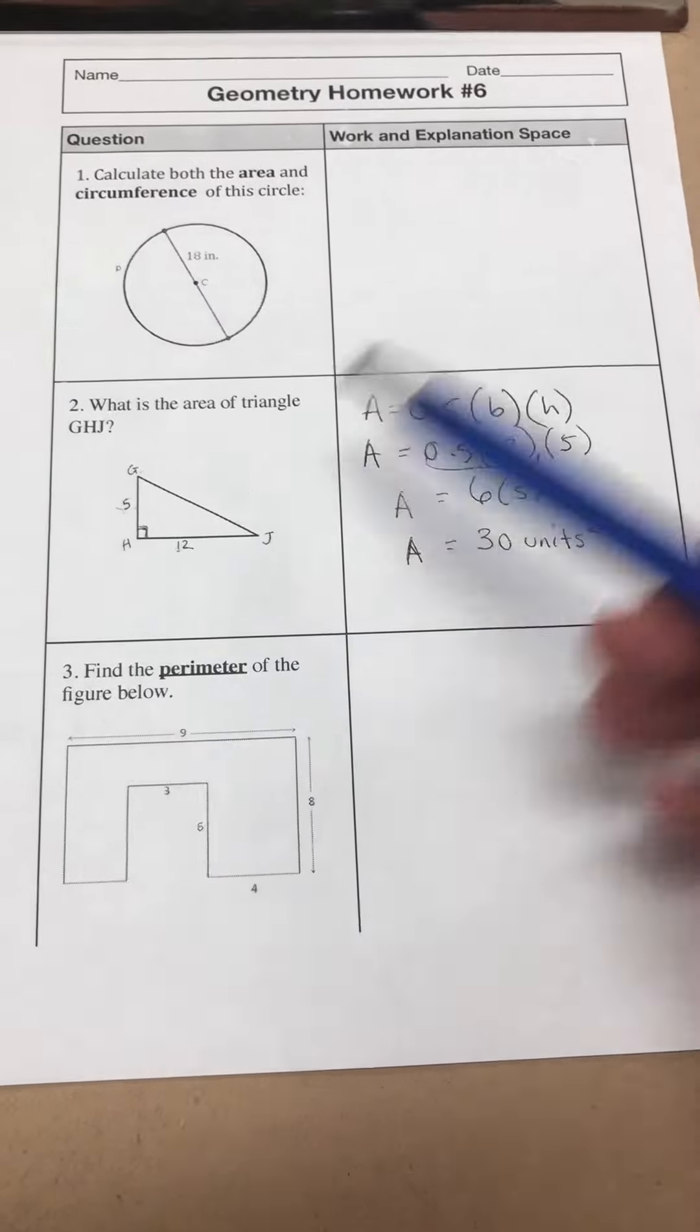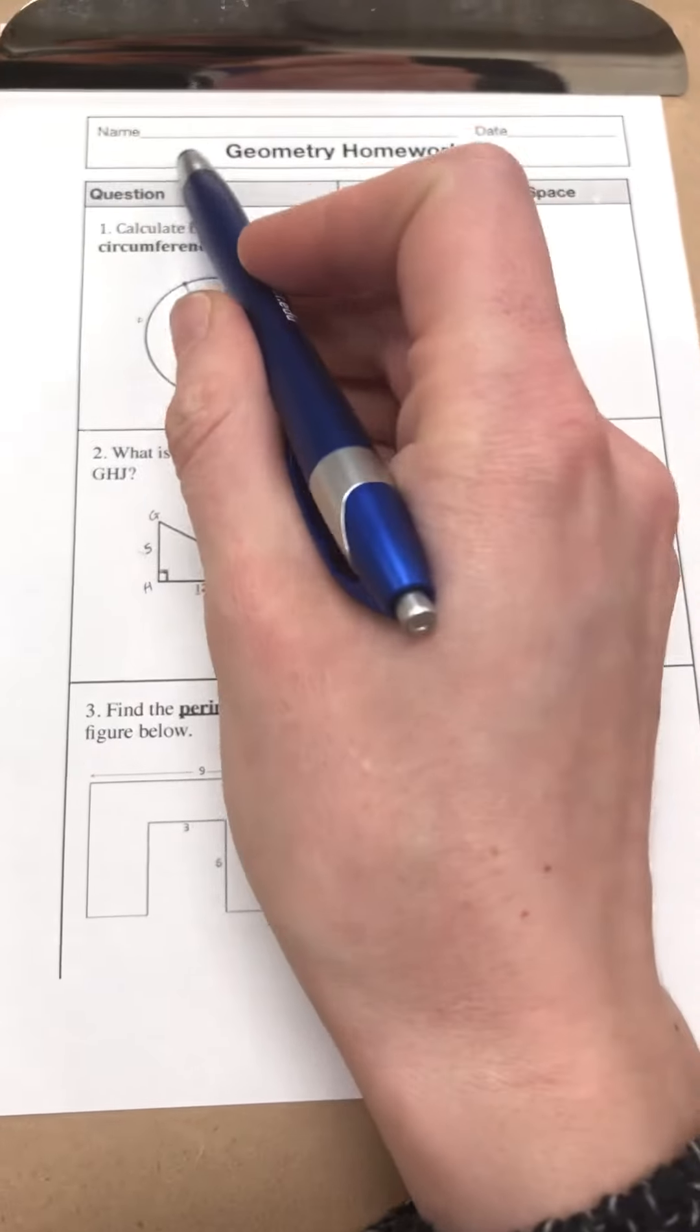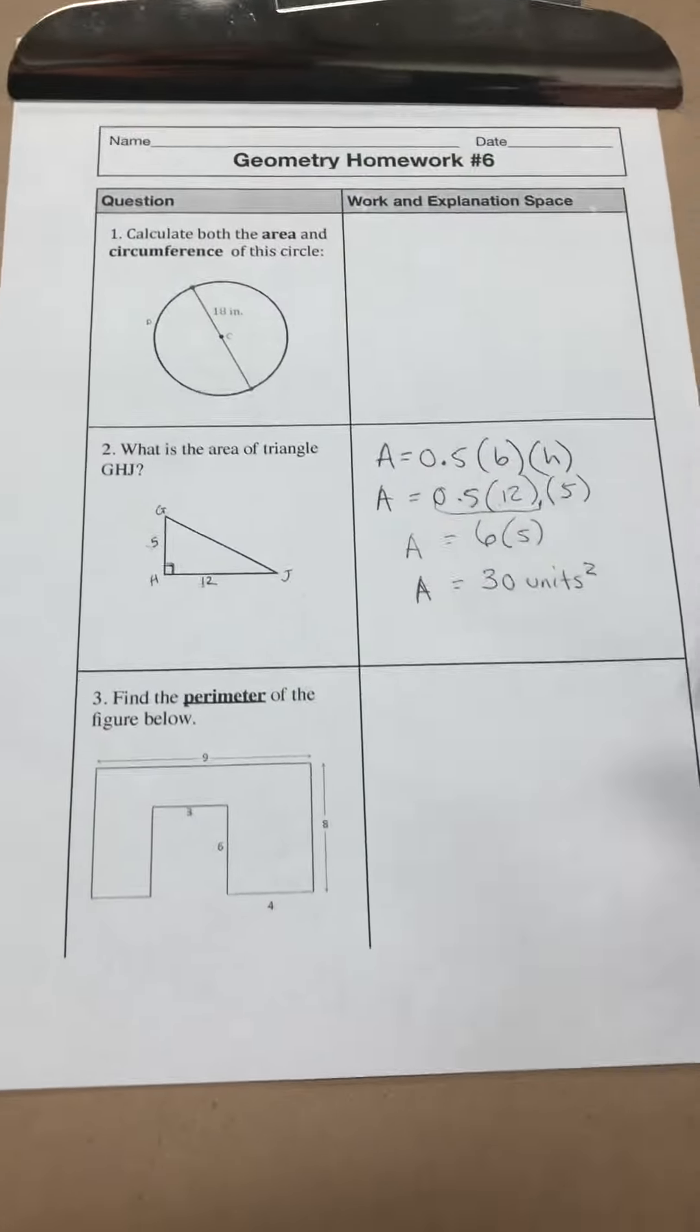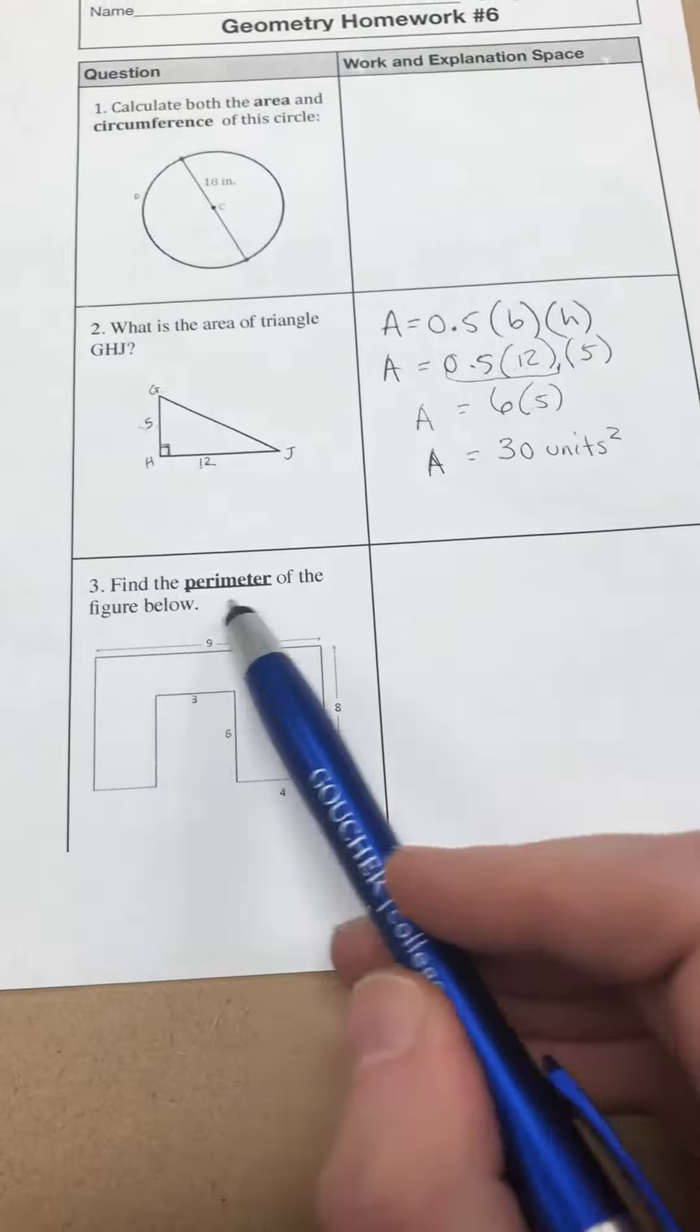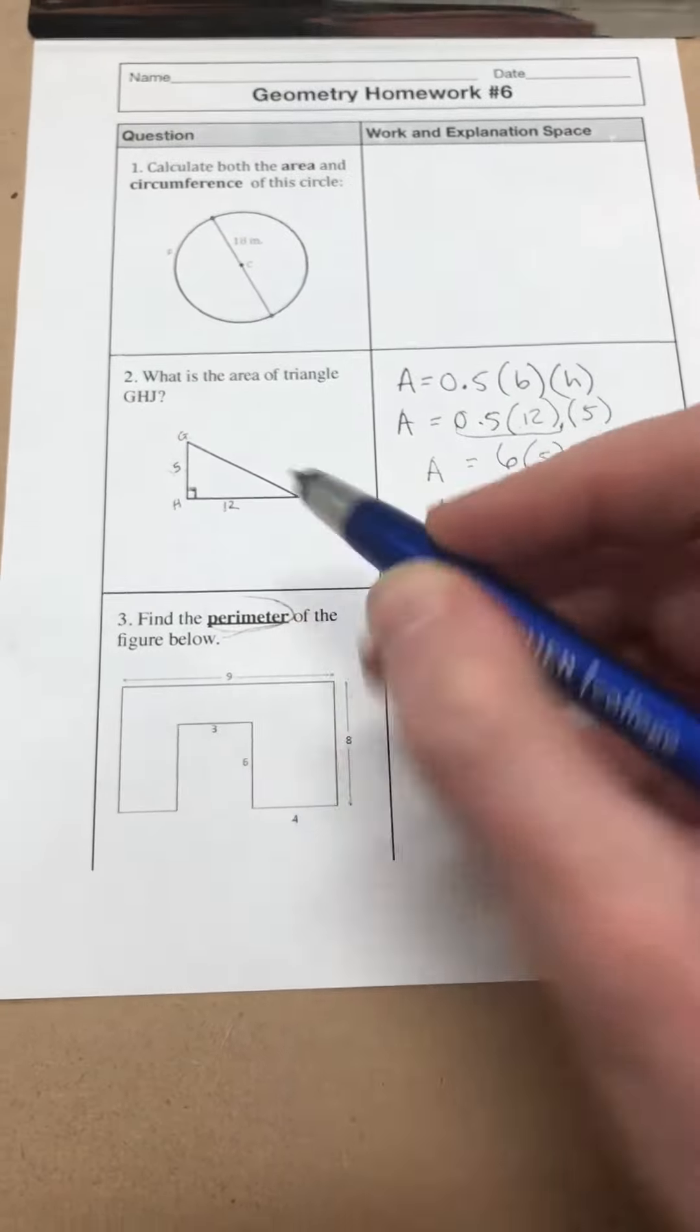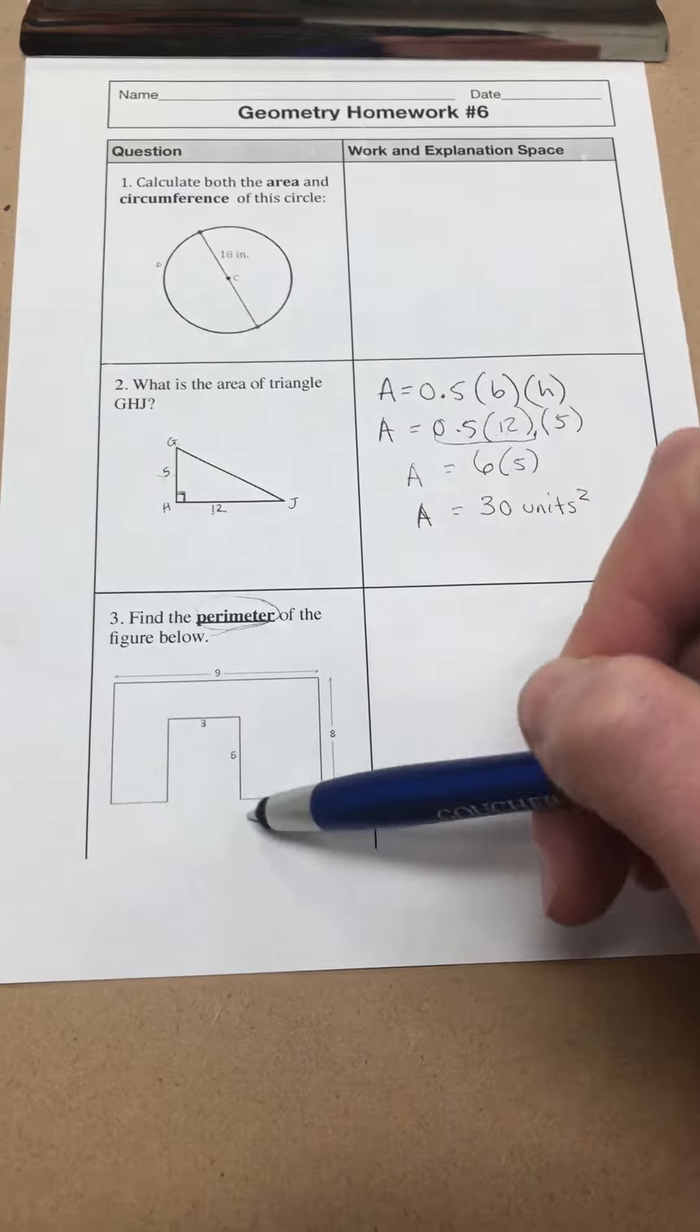All right, this is question number three on homework number six. Please make sure that your name is on the top of your paper before you come to class. So this one is asking to find the perimeter of the figure below. We know that perimeter means all of the sides added together.